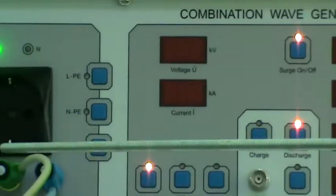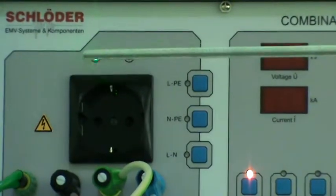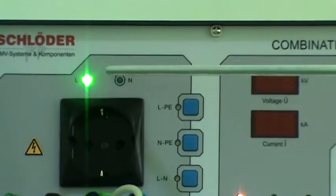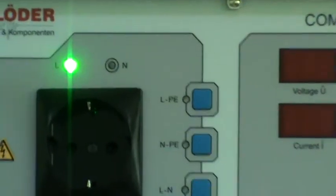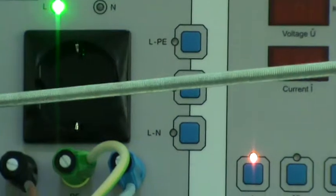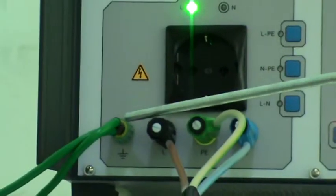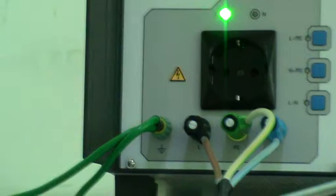When our connections are proper then this LED should go green. If it is not green and it is red, means our connections are not correct. There is one ground jack at the front panel. It should be grounded to the ground clip.